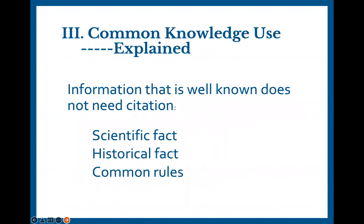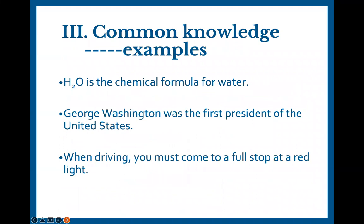Common knowledge refers to information that is so well known and inarguable that it does not need a citation. There are seven days in a week — we can all agree on that. H2O is the chemical formula for water. We need to stop at a red light — we might not always do that, but we all know we should. If any of the above were the main subject of a paper, we'd want to include a citation. If I were writing a paper discussing motor vehicle violations, I would want to cite where in the New York Statutes Annotated it says we must stop at a red light or risk getting a ticket. So depending on what you're writing about, you may need to put citations on things considered common knowledge.